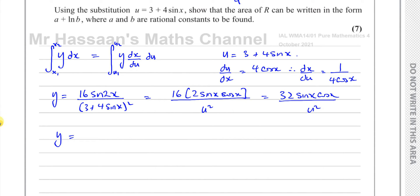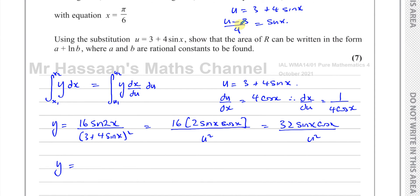This is going to be 32sinx·cosx over u². So I can say y is equal to, now I know that sinx = (u - 3)/4, so I'll have 32 times (u - 3)/4. That's sinx. And I've got my cosx, which I can see is going to cancel with this when I put them together. So I'm going to leave that as cosx over u². So that's how I can write y so far.